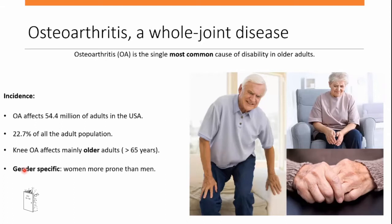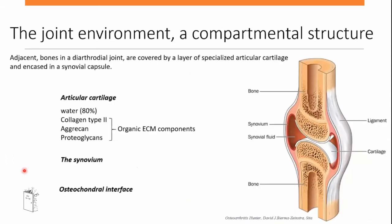Osteoarthritis is a whole joint degenerative disease, and I bet many of you have known someone affected by it, because it's the single most common cause of disability in older adults. It has a high incidence — in the United States alone, it affects more than 55 million adults. I'll focus on osteoarthritis at the knee joint, particularly post-traumatic osteoarthritis, since I was a soccer player.